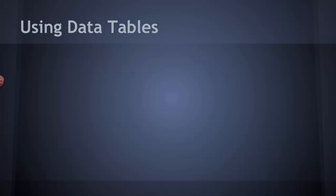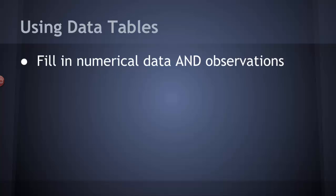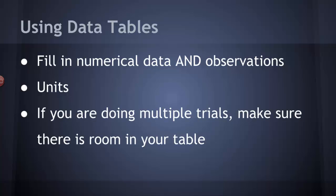Once you have your data table set up and you go to do the experiment, you can then fill in the data - numerical data, measurements, and observations - as they happen during the experiment. Make sure that if you are using numerical data, you have the proper units so that you know what the context of that data is. If you're doing multiple trials, in other words you're doing the same experiment a couple of times through, make sure there's enough room in your table.